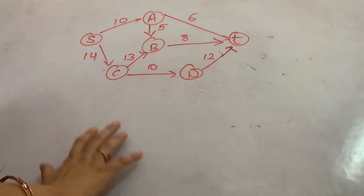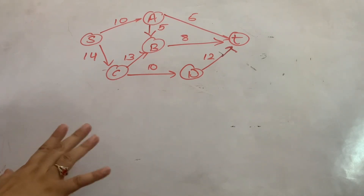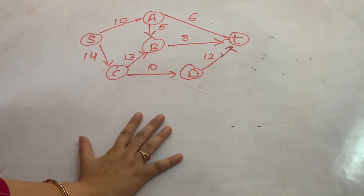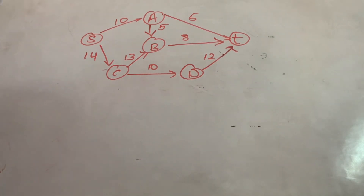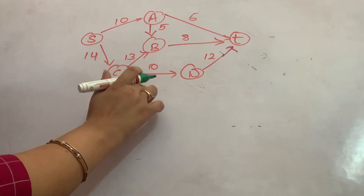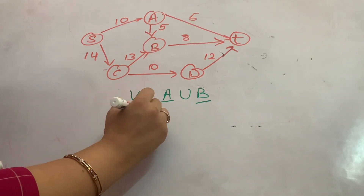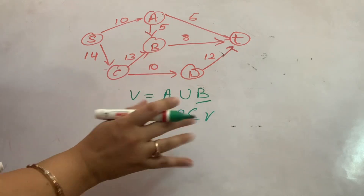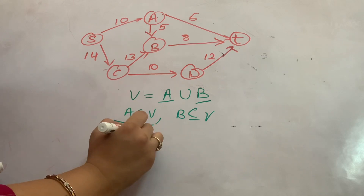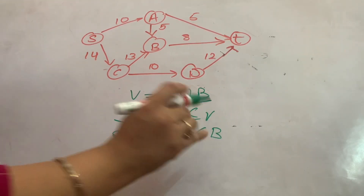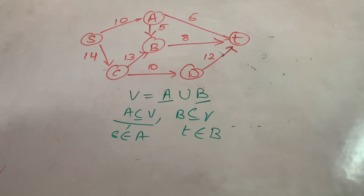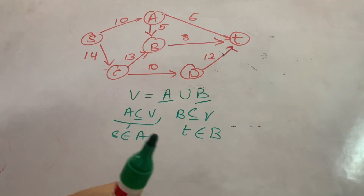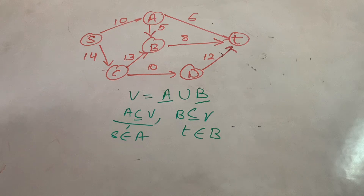For the given question, we need to find the minimum cut in a graph. To understand the minimum cut, consider this as a normal graph without any flow, source, or sink. You have to find two subsets A and B of vertices such that the source node S must be in A and the sink node T must be in B. They are mutually exclusive sets with no node repeated in both sets. Let us see what a cut is.